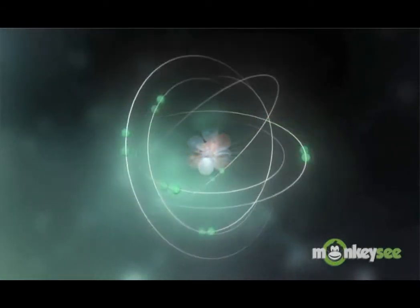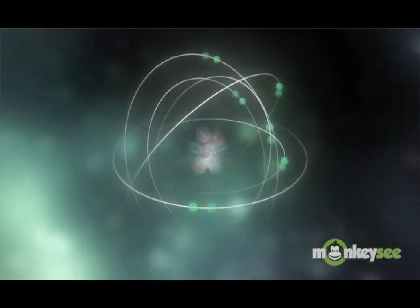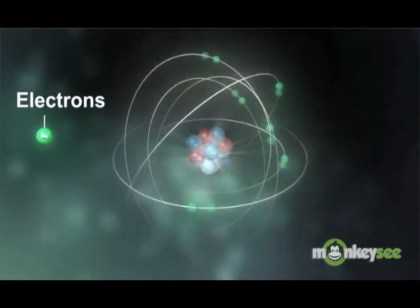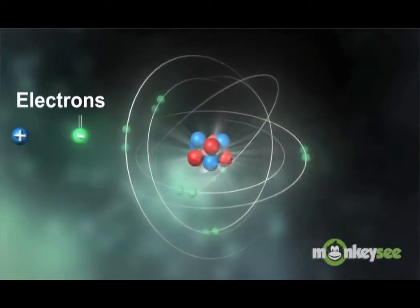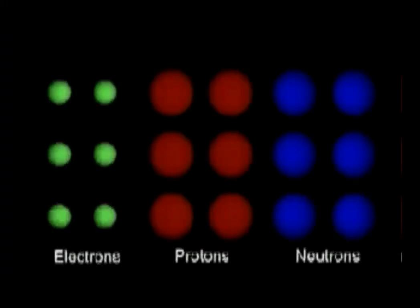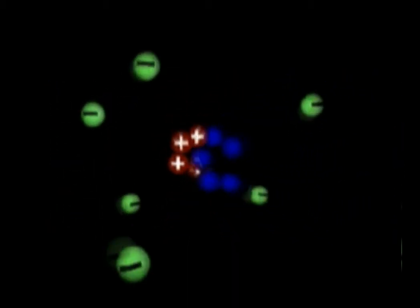Revolving around the nucleus, like planets around the sun, are negatively charged particles called electrons. Electrons and protons attract each other. Each atom has the same number of electrons as protons, and it's the force of attraction between the positive and negative charges that prevents the electrons escaping.